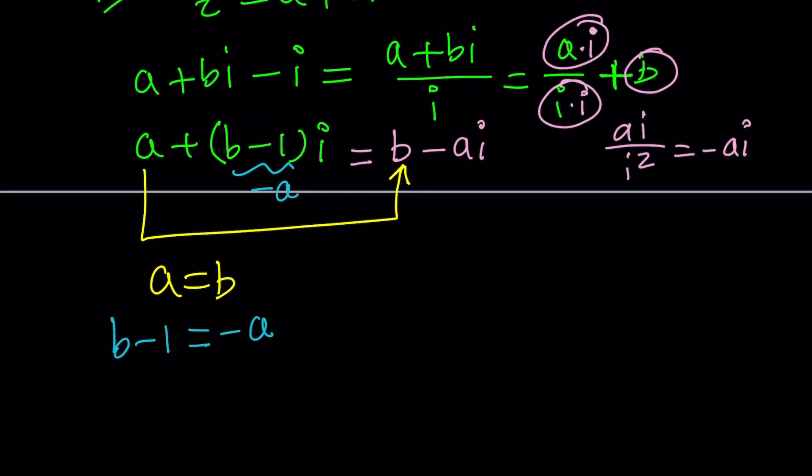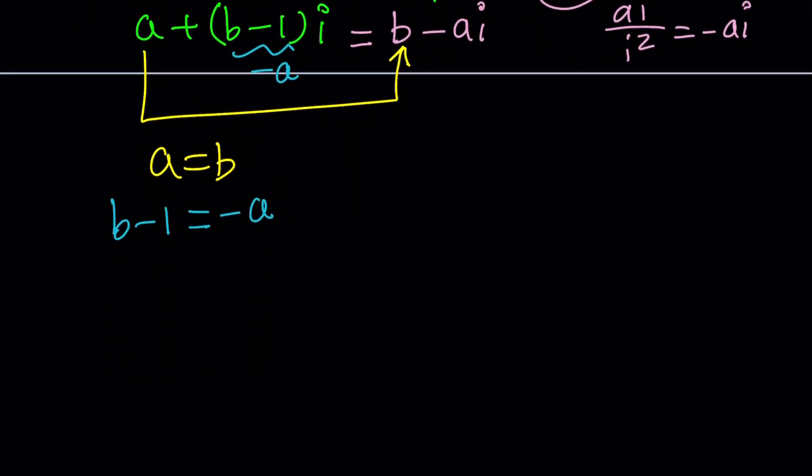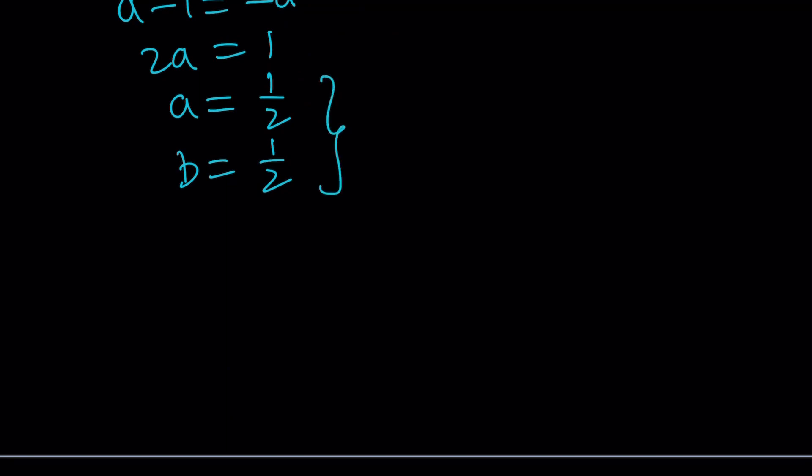There's a couple different ways to solve it. Probably the easiest one is to substitute, replace B with A. We get A minus 1 equals negative A, and switching these numbers, A equals 1 half. Since A and B are equal, then B also equals 1 half. And remember, our number Z could be written as A plus B I. So Z can be written as 1 half plus 1 half I. And that will be the only solution to this equation.